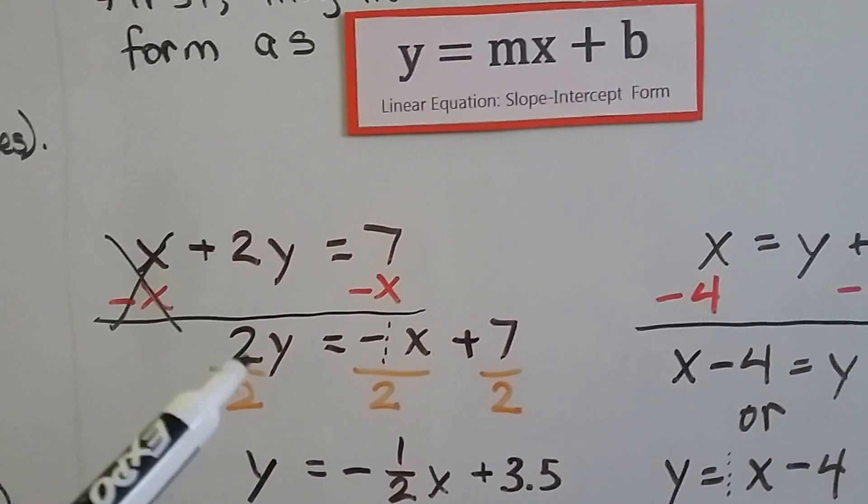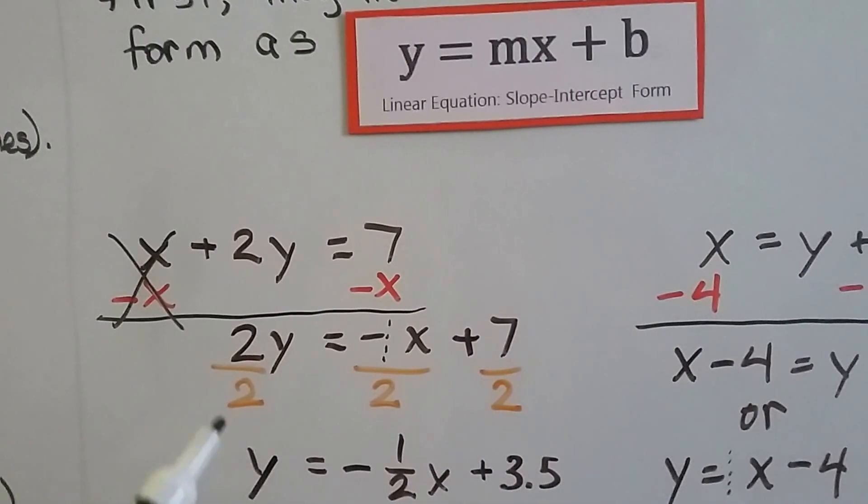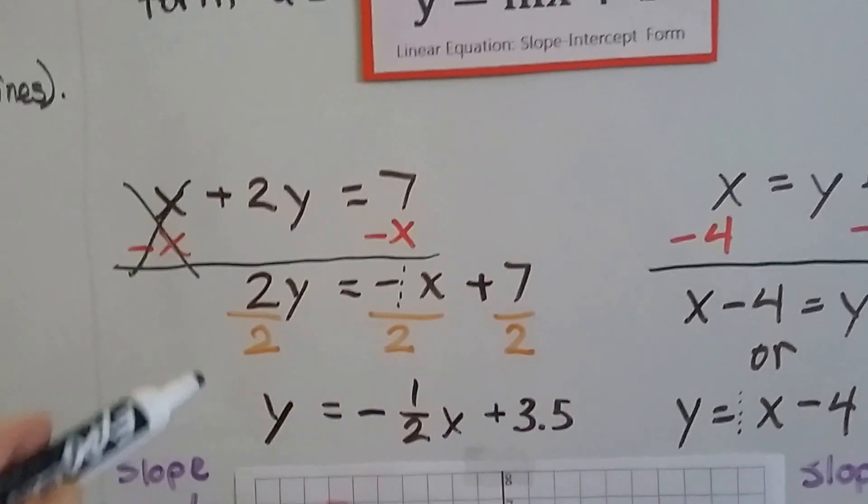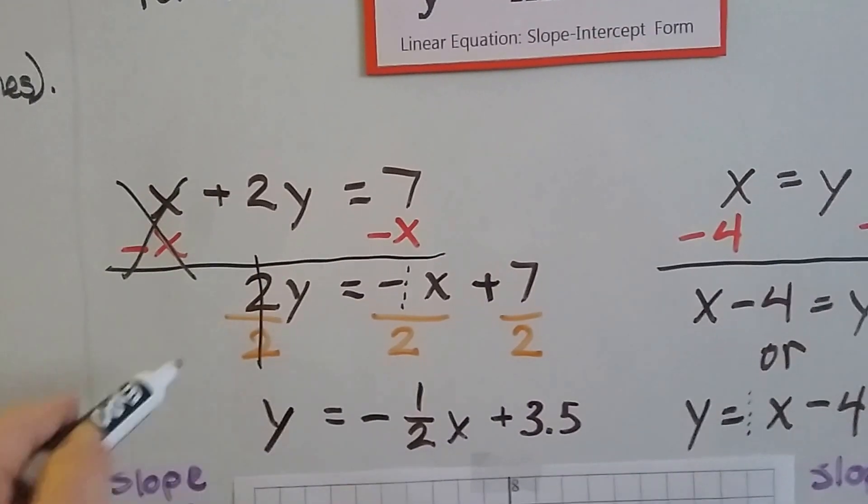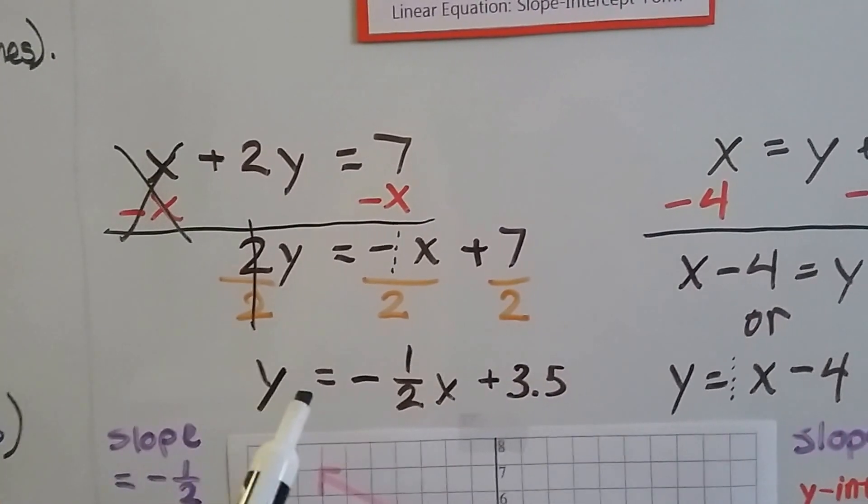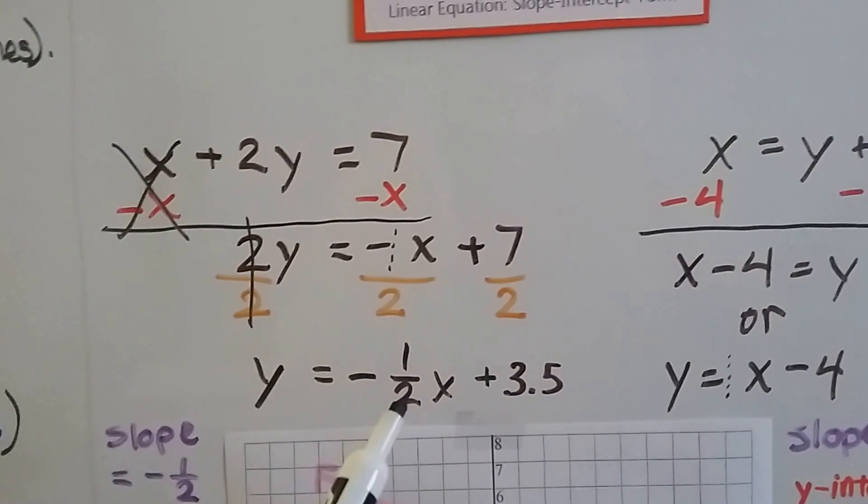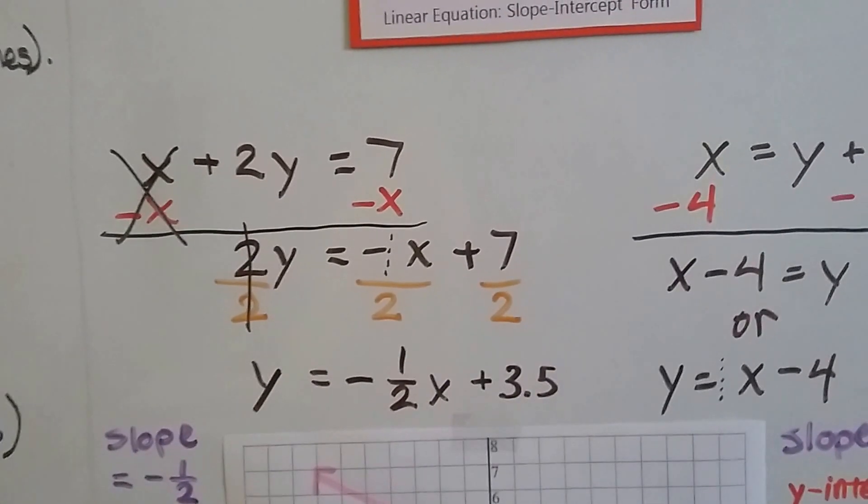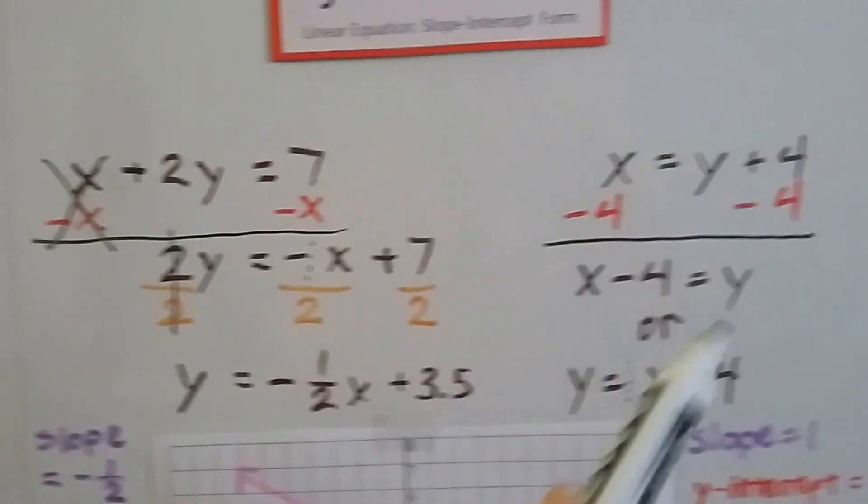Now, to get this y by itself to solve for y, we have to divide each side by this 2 coefficient. That way, this turns into our friendly invisible one identity property, and we get y equals negative one-half x plus 3.5, because that's what 7 over 2 is. So now it's in slope-intercept form. Let's do the next one.